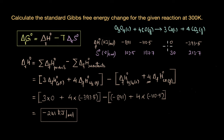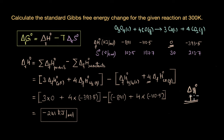You may notice the enthalpy of formation of cobalt is zero. By convention, the standard enthalpy of formation of an element in its standard state is defined as zero, because the standard enthalpy of formation represents the enthalpy change when one mole of a compound forms from its constituent elements. For an element like cobalt already in its most stable form, no formation reaction is needed, so ΔH°f = 0.